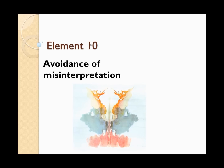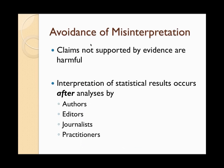Element ten is the avoidance of misinterpretation. Although in statistics we tolerate degrees of ambiguity and multiple perspectives, we also understand that some interpretations are completely invalid or frankly wrong. Claims not supported by the evidence are harmful to public health. An important thing to remember is that the interpretation of statistical results occurs after the analysis as a non-quantitative exercise — not only by statisticians but often primarily by authors, editors, journalists, clinical practitioners, and the public at large. So good communication in terms of interpretation is key.